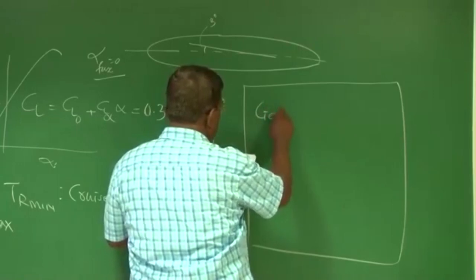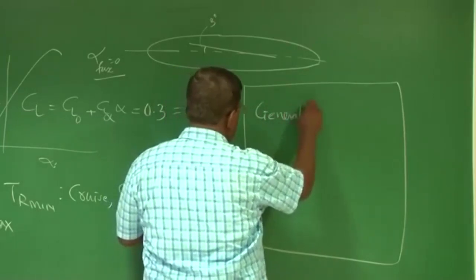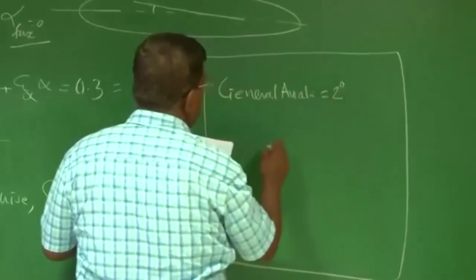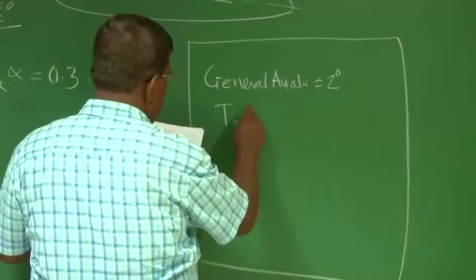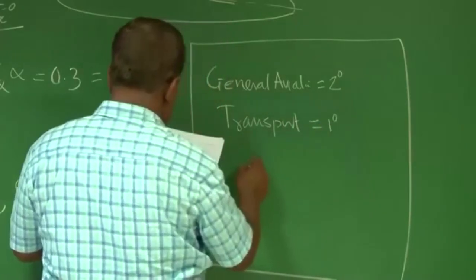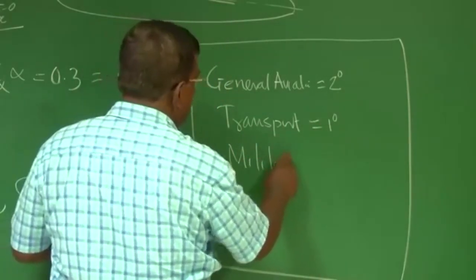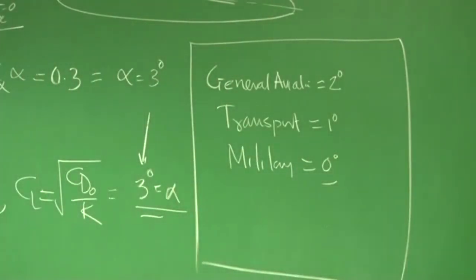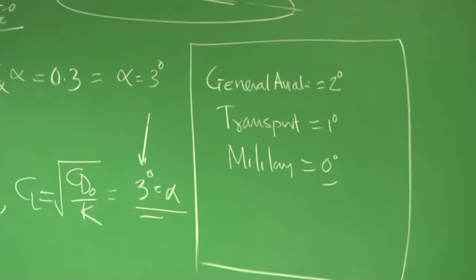But historically, it is to be noticed that around for general aviation, around 2 degrees wing setting angle for transport, may be around order of 1 degree and military, may be 0 degrees. But whether it is 0, 1 or 2 degrees, it does not make much of a difference as far as carefully designed fuselage is concerned in terms of drag minimization. But these are general guidelines.